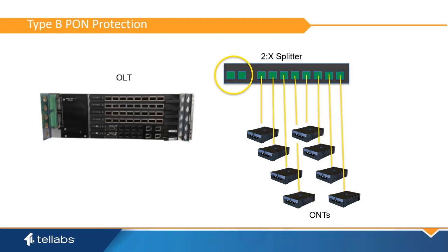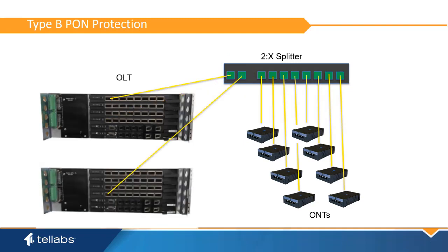Protection interfaces can be two ports on different PON cards within the same OLT, or on two ports on different OLTs. This provides full equipment and facility redundancy to the splitter.